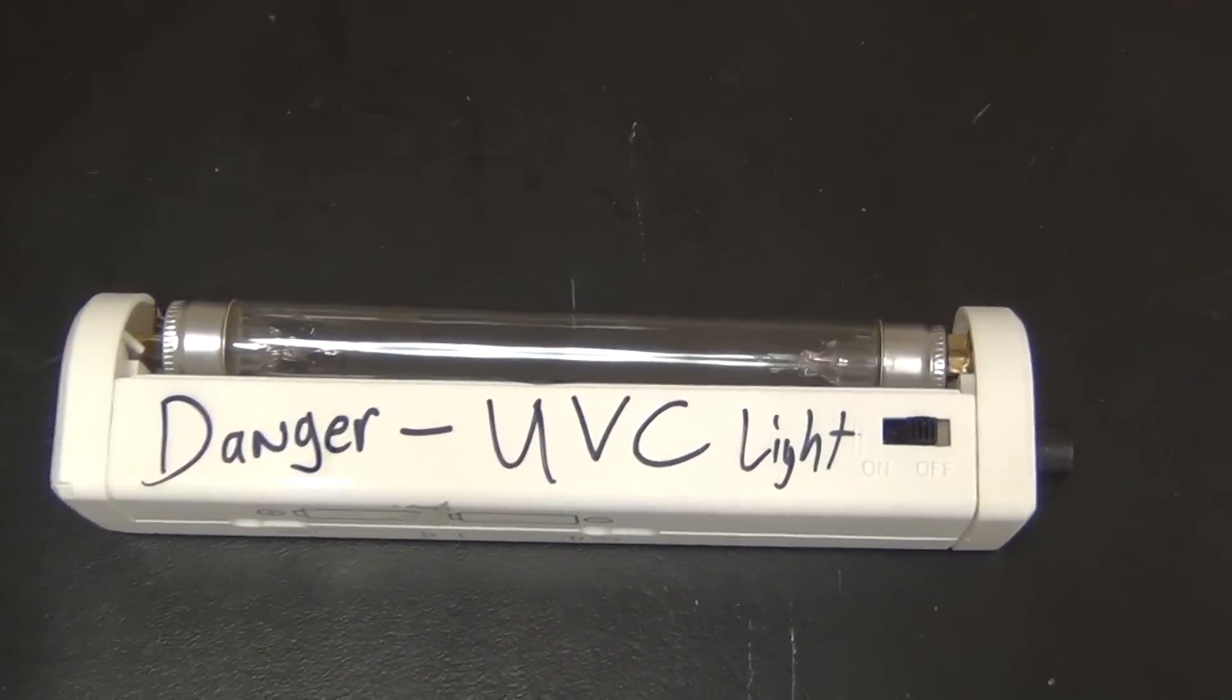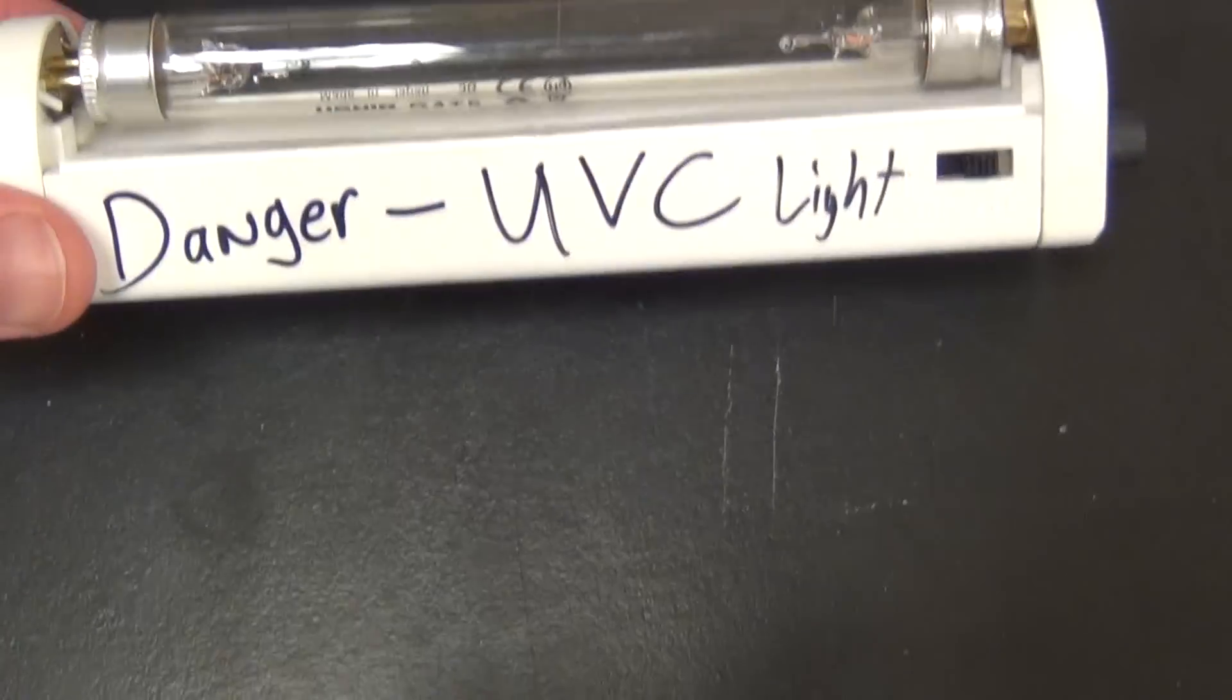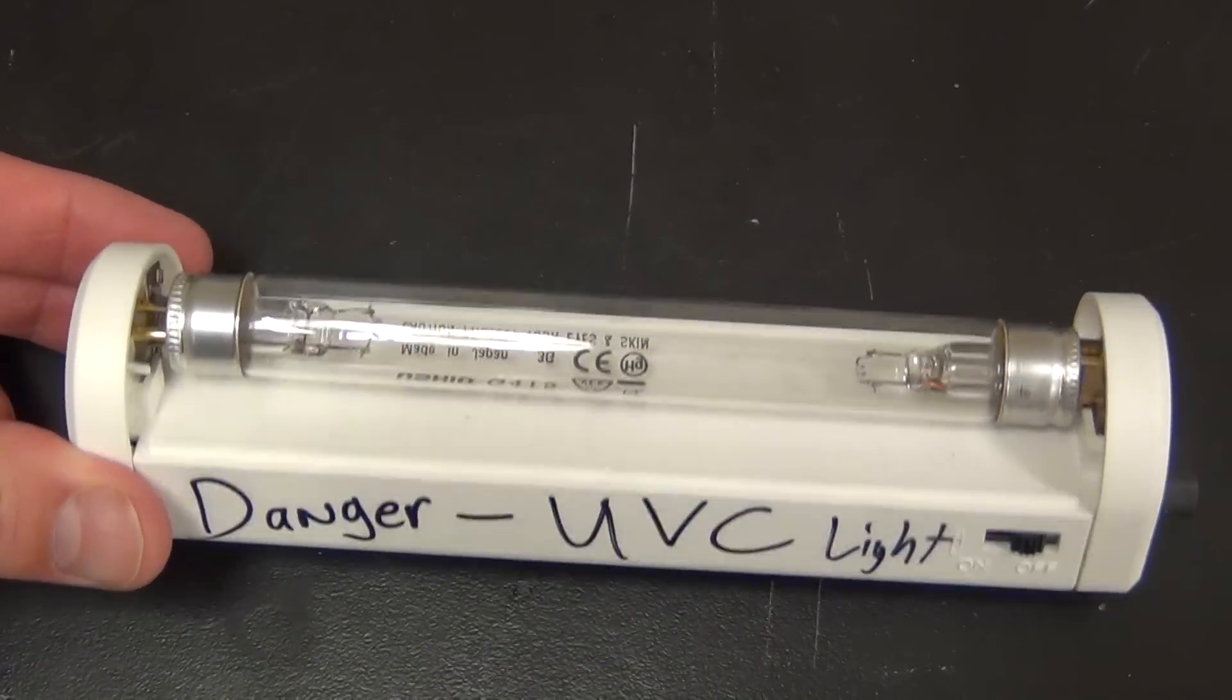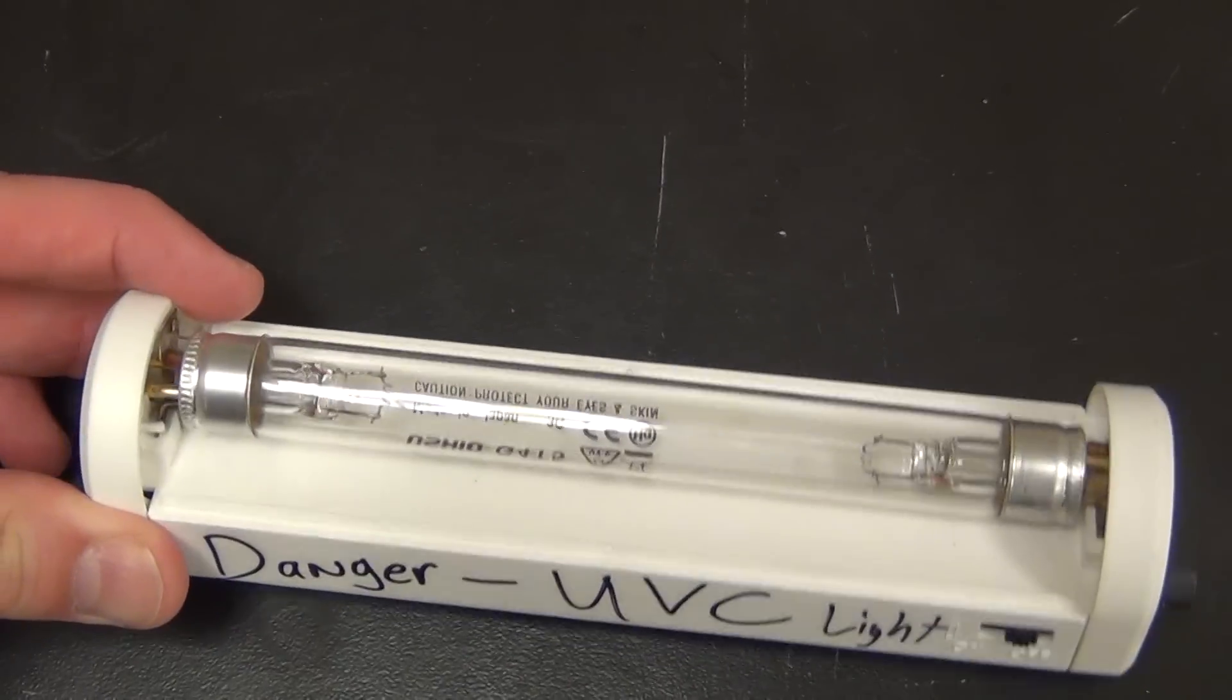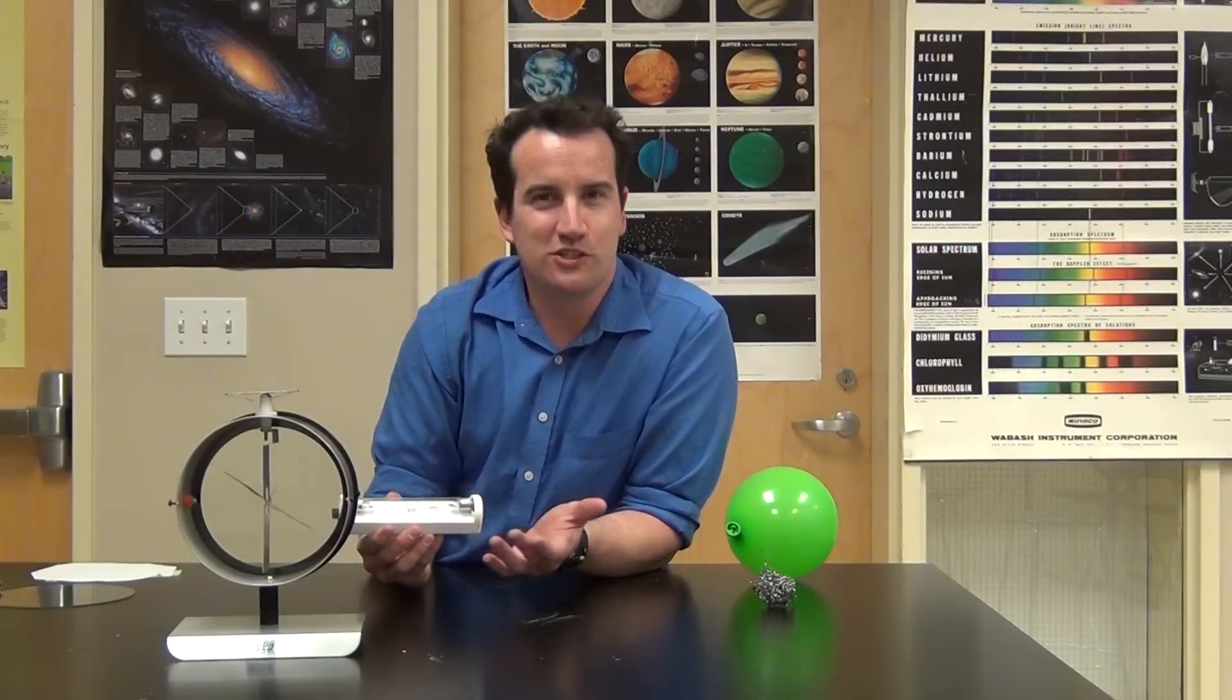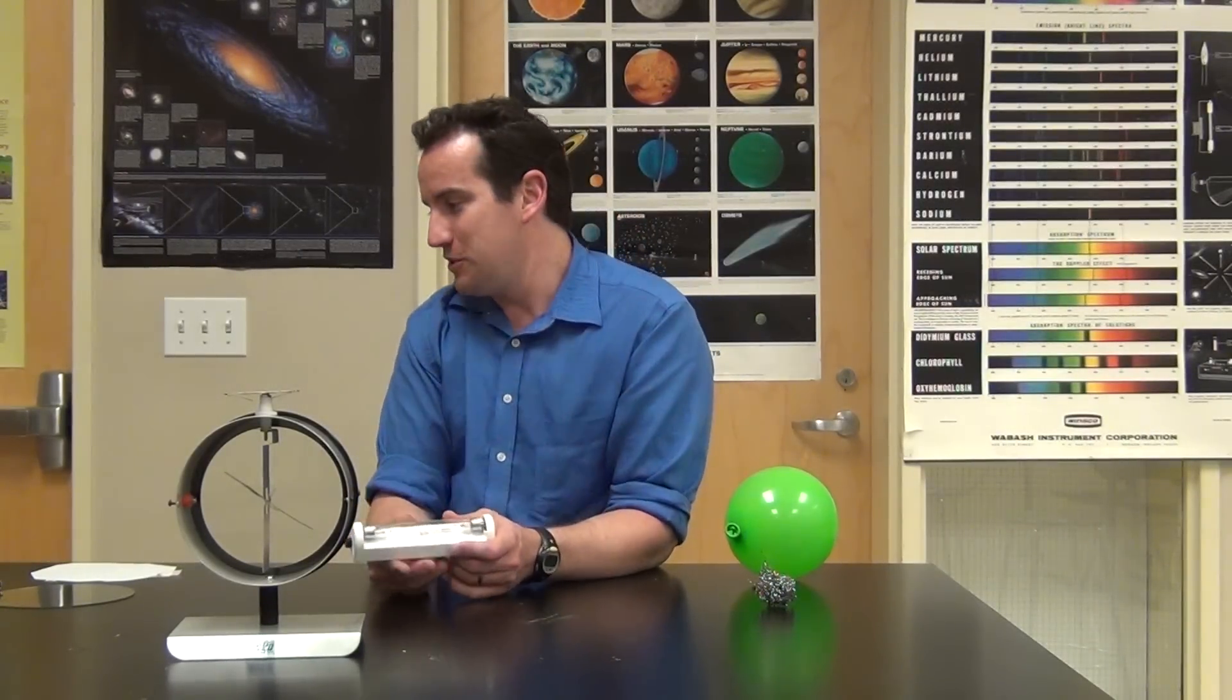There actually is a shorter wavelength called ultraviolet V, for vacuum ultraviolet, but this one is typical. In fact, this lamp is sold as a germicidal lamp, as in it kills germs. Specifically, it destroys the DNA in the germs.